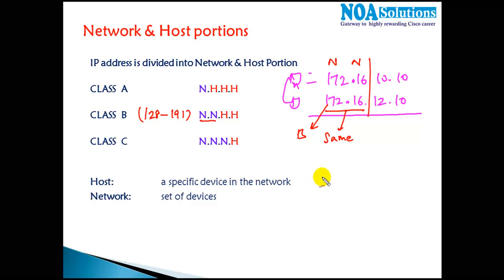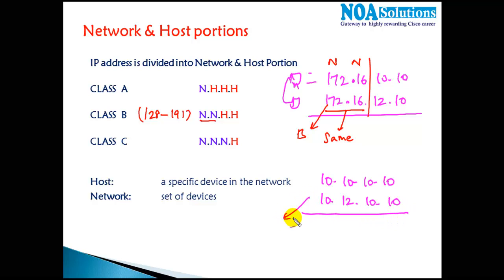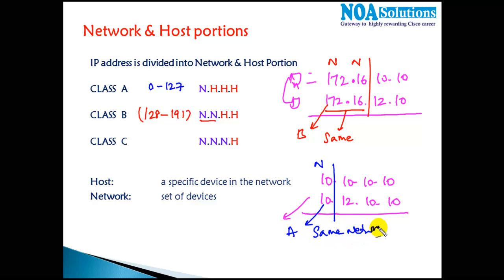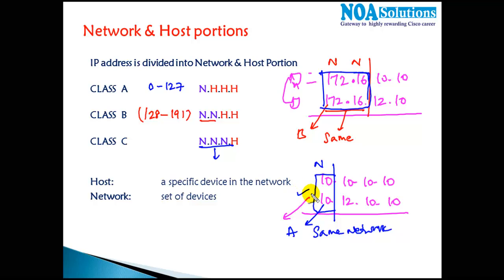One more example: 10.10.10.10 and 10.12.10.10. This is a Class A address (range 0–127). In Class A there is only one network portion. We compare only the first portion, which is '10' in both cases — they are the same. So these two devices are on the same network. To summarize: for Class A compare one portion, for Class B compare two, and for Class C compare three portions.